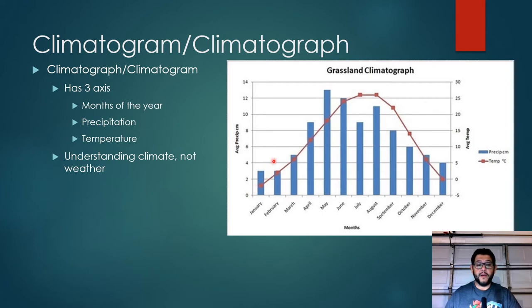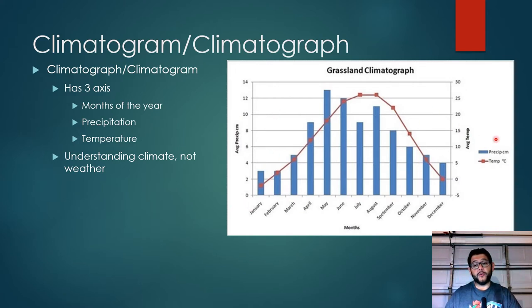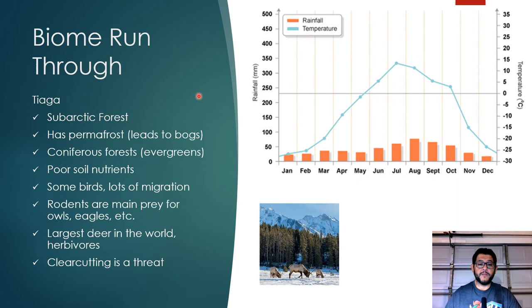This lets you know how the climate is long-term. For example, this is a grassland climatograph. You can see that throughout the year, temperature rises quite a bit in summer months — May, June, July, August — then falls from September through December and rises again by April. Precipitation shows more of a spring rain, a slight drop in summer, and then a sharp drop in fall and winter. You will be asked to interpret these on the AP exam.